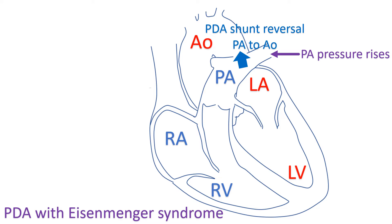the shunt across the PDA reverses so that blood flows from the pulmonary artery to the aorta. This usually causes cyanosis of the lower limbs, known as differential cyanosis. Upper limbs are not cyanosed because the ductus joins the aorta beyond the origin of the left subclavian artery.